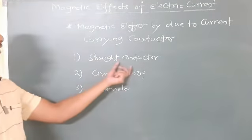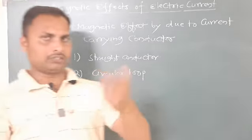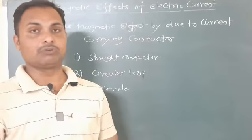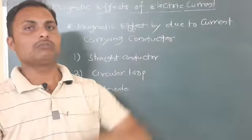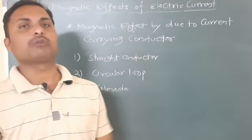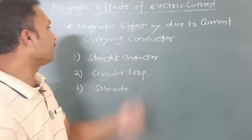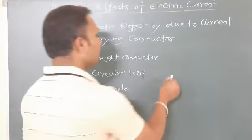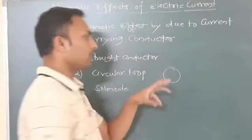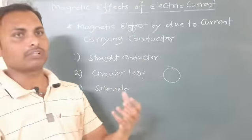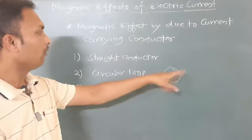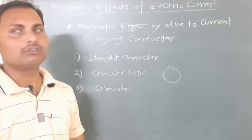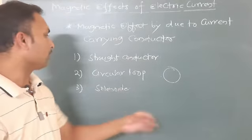Just you can see here a straight conductor. This straight conductor — you have seen wires in your home. Those copper wires are nothing but straight conductors. Now circular loops look like circles. These circular wires are nothing but circular loops.